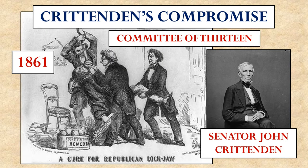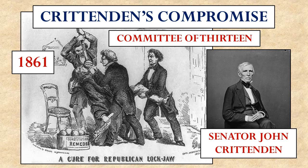Even though these states were, by their own acts, leaving the Union, there was still hope in Congress that some sort of compromise could be reached to bring them back in. This was led by a senator named John Crittenden. He was in a committee of 13 senators who tried to work out some sort of compromise to keep the southern states in the Union. Crittenden's compromise consisted of a series of constitutional amendments designed to forever protect the practice of slavery. His own committee did not approve them, and when they were put before the full Senate, they failed there also.